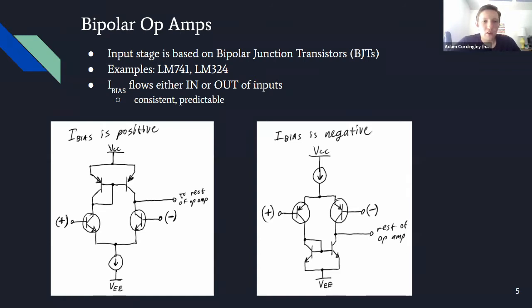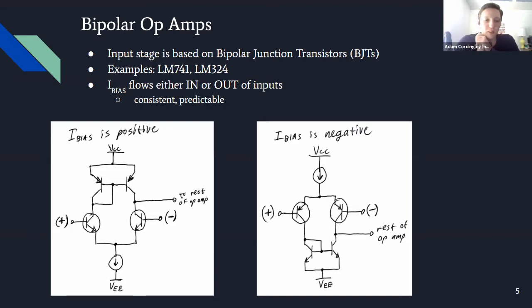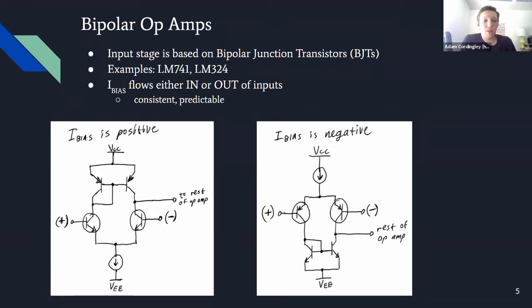Bias current is pretty consistent and predictable. Looking at two diagrams of simplified input stages — on the left, the bias current is flowing into the input. We know BJTs are current-controlled amplifiers, so you have a fairly consistent current assuming your two transistors are very similar. A key goal with op amp input stages is making the transistors on the input stage very, very similar — ideally identical.